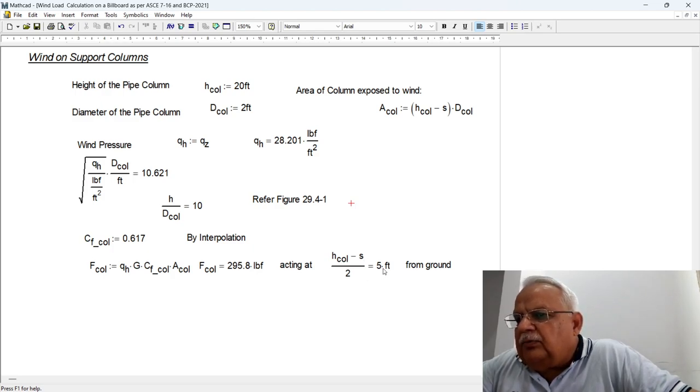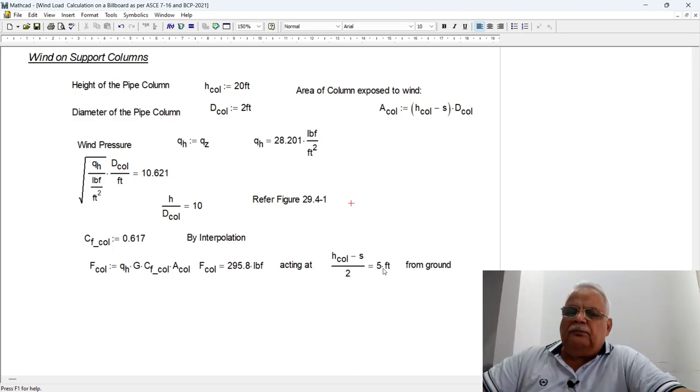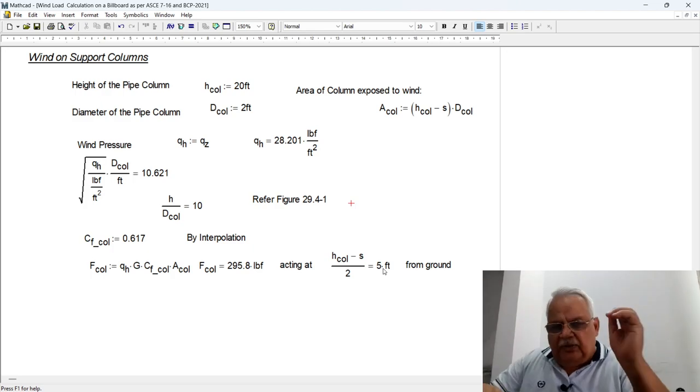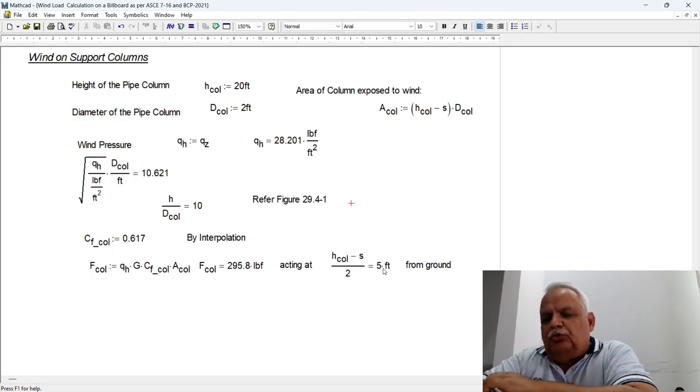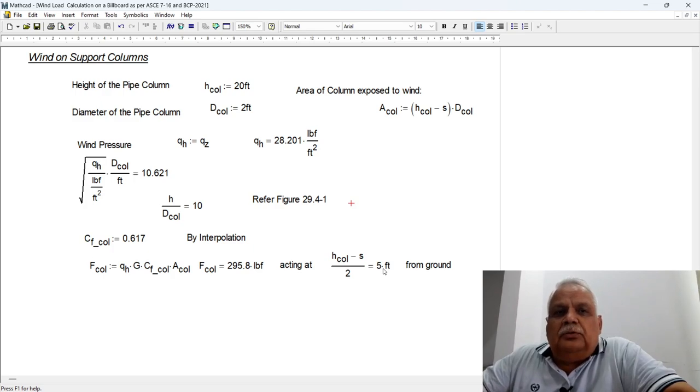Then the force on the column comes out to be 295.8 pounds, and this will be acting at height of the column minus S over 2, that means 5 feet from the ground. Very simple calculation, it's not rocket science.